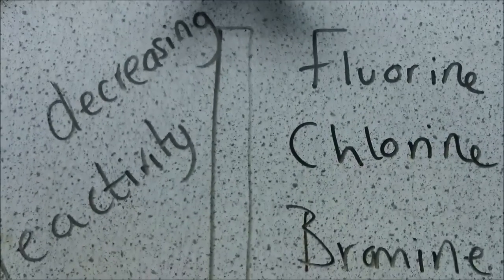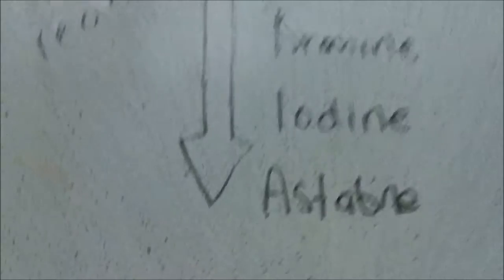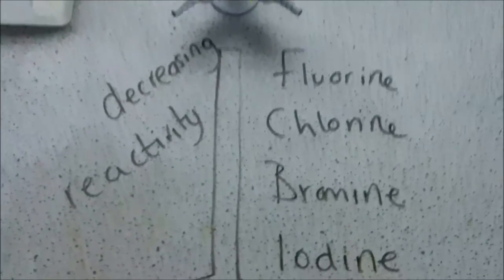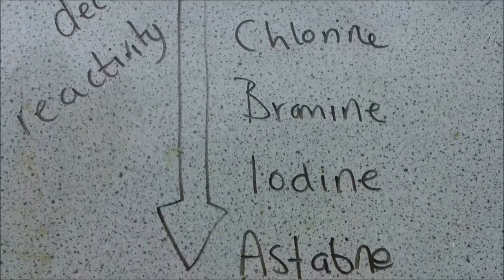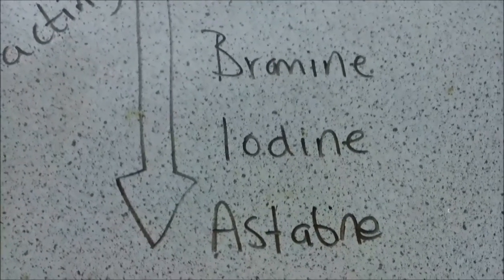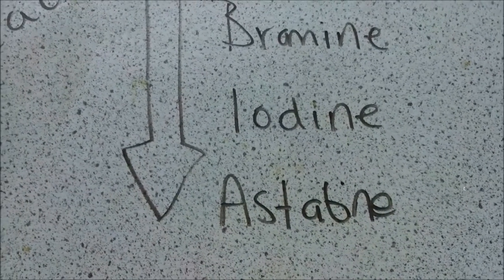So, how do the halogens displace each other? And what does this mean? Well, it means a more reactive halogen, like fluorine or chlorine, would displace a less reactive halogen, like bromine or iodine or astatine, from a solution.